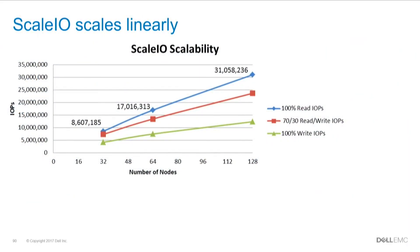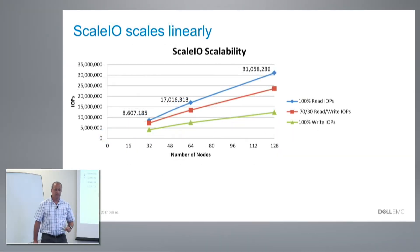My last slide is scalability. I kept talking about per node — now what happens when you add nodes? We took 128 nodes in the lab and ran three tests: 100% reads, a mixed workload, and 100% writes, at 32, 64, and 128 nodes. With 32 nodes you get 8 million IOPS; with 64, you get 17 million IOPS; with 128, you get 31 million IOPS. This is as linear as you can hope — it's not 100%, since that would be 34 million, but 31 million is still very nice.